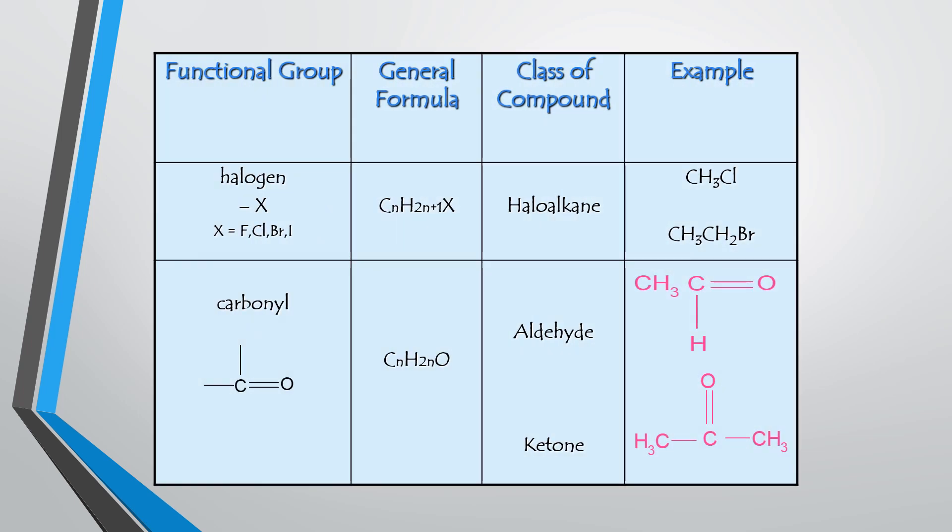The next functional group is halogen. Halogen refers to all elements in group 17, which includes fluorine, chlorine, bromine, and iodine. The general formula for the halogen functional group is CnH2n+1X, and the class of compound is called haloalkane.